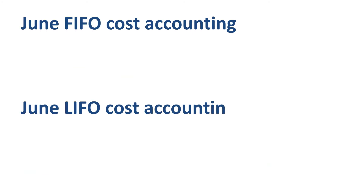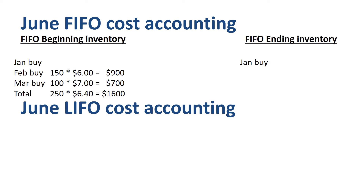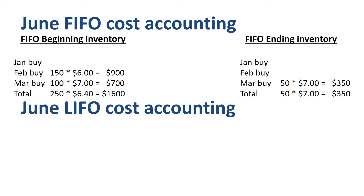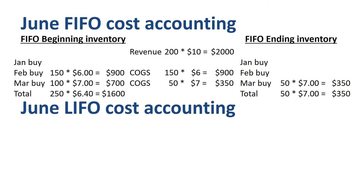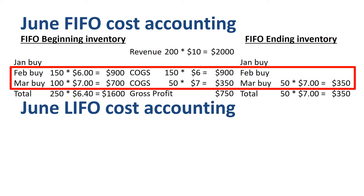Onward to June. The ending inventory is just one box of 50 units. Applying FIFO, what remains in inventory at the end of June is just 50 units from the March buy — 50 units at $7 each, $350 in total. If we prepare the income statement for June: revenue is 200 units times $10 = $2,000; COGS is 150 units times $6 = $900 plus 50 units times $7 = $350, so total COGS of $1,250, and therefore a gross profit of $750. Out of the remaining February buy, we took all 150 units to COGS and 50 units from the March buy into COGS. The remaining 50 units from the March buy go to the ending inventory.